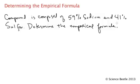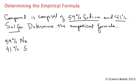What you need to do is take this information and determine how we calculate the formula. The first step is to take the information they give you. They give you 59% sodium and 41% sulfur, so I'm going to write that here at the bottom: 59% sodium (Na) and 41% sulfur (S).